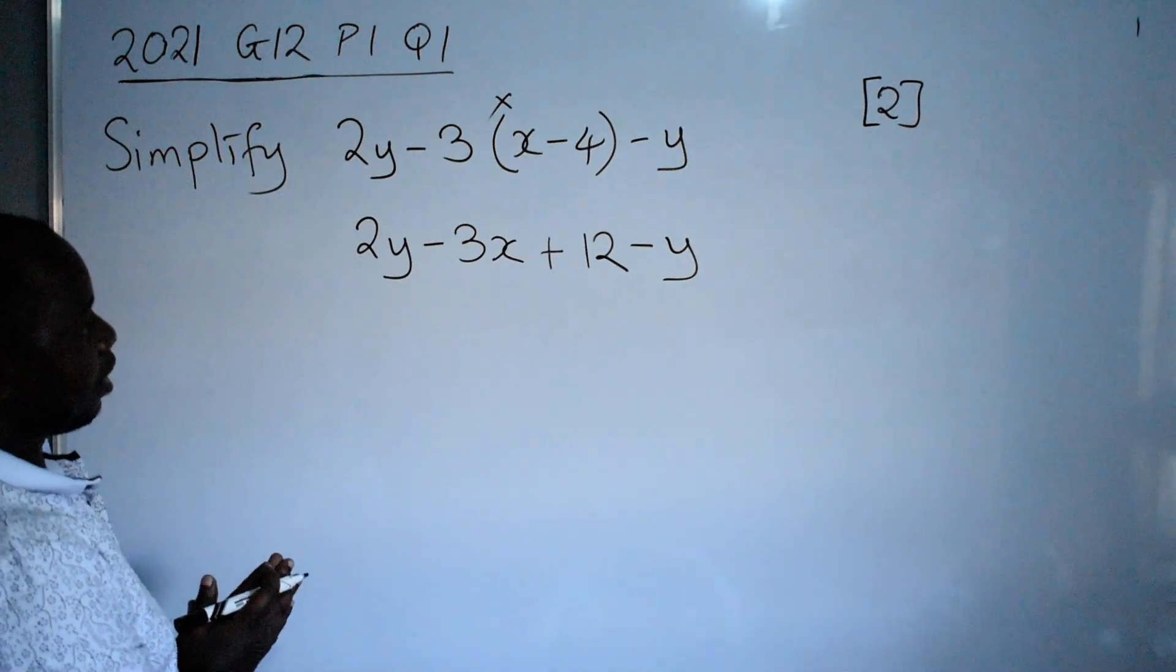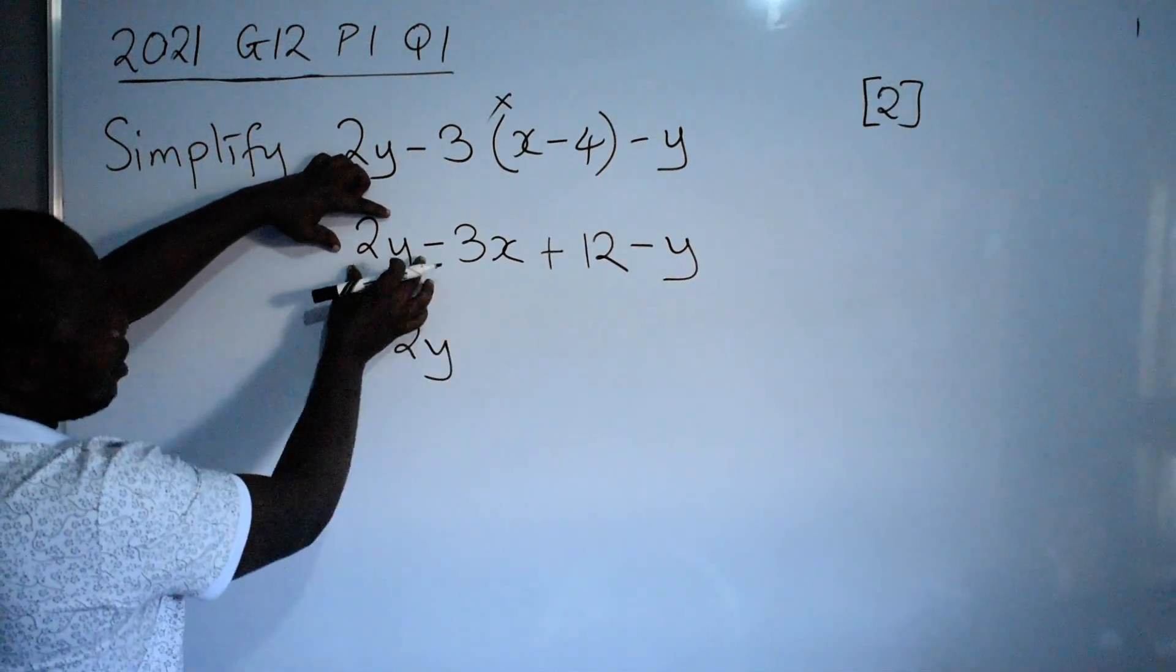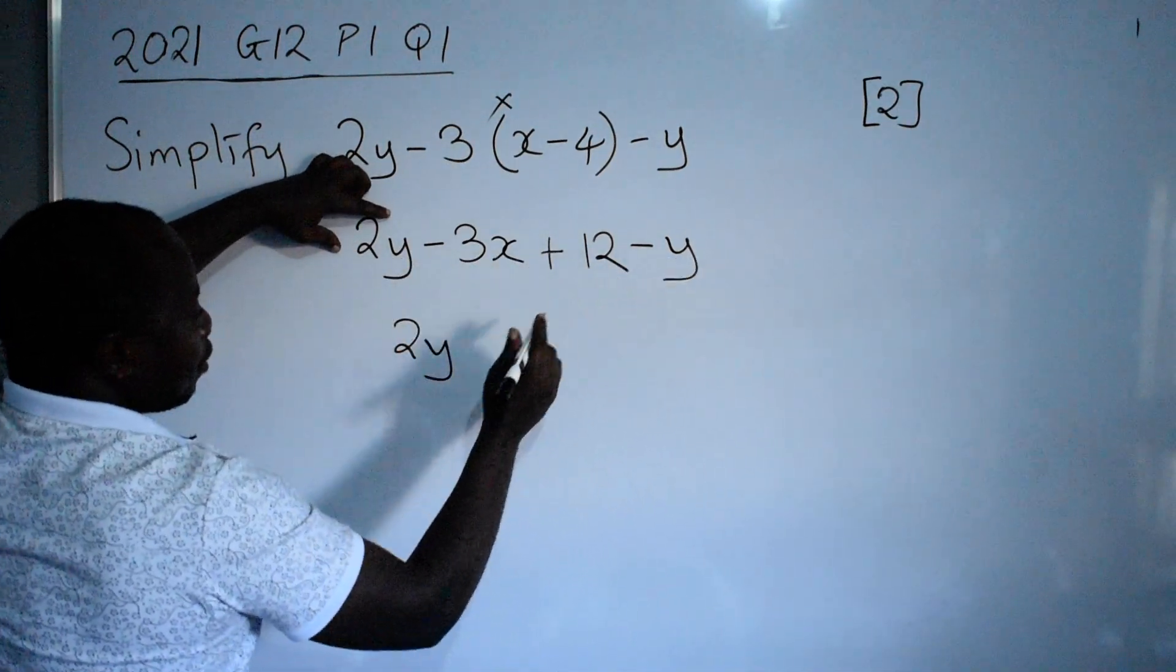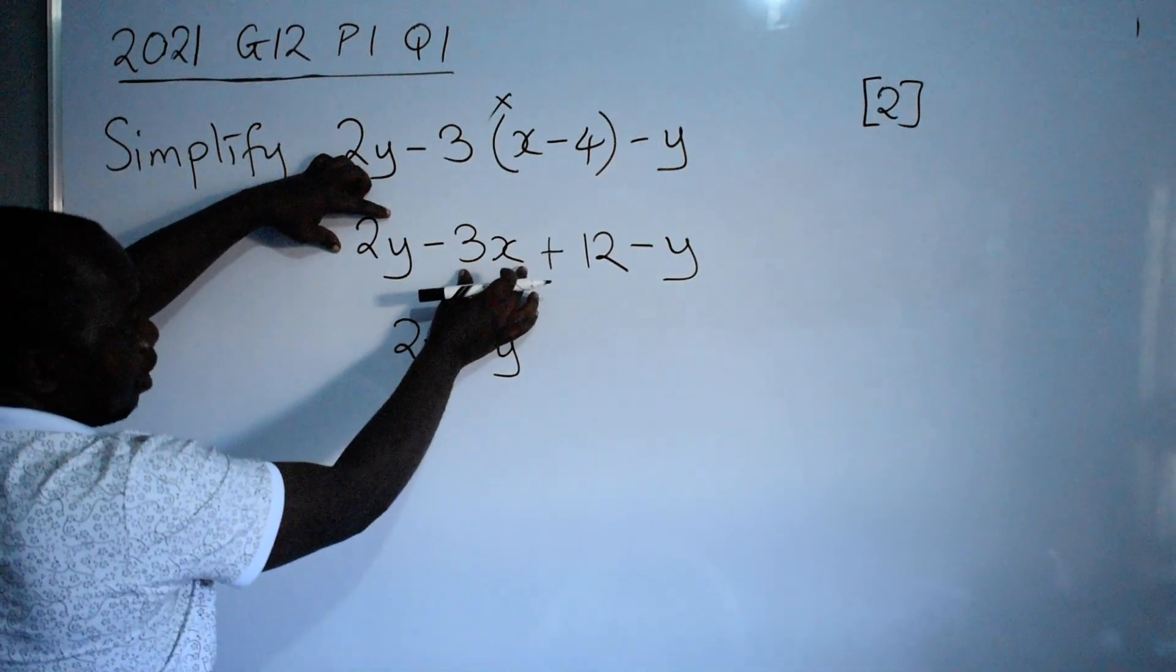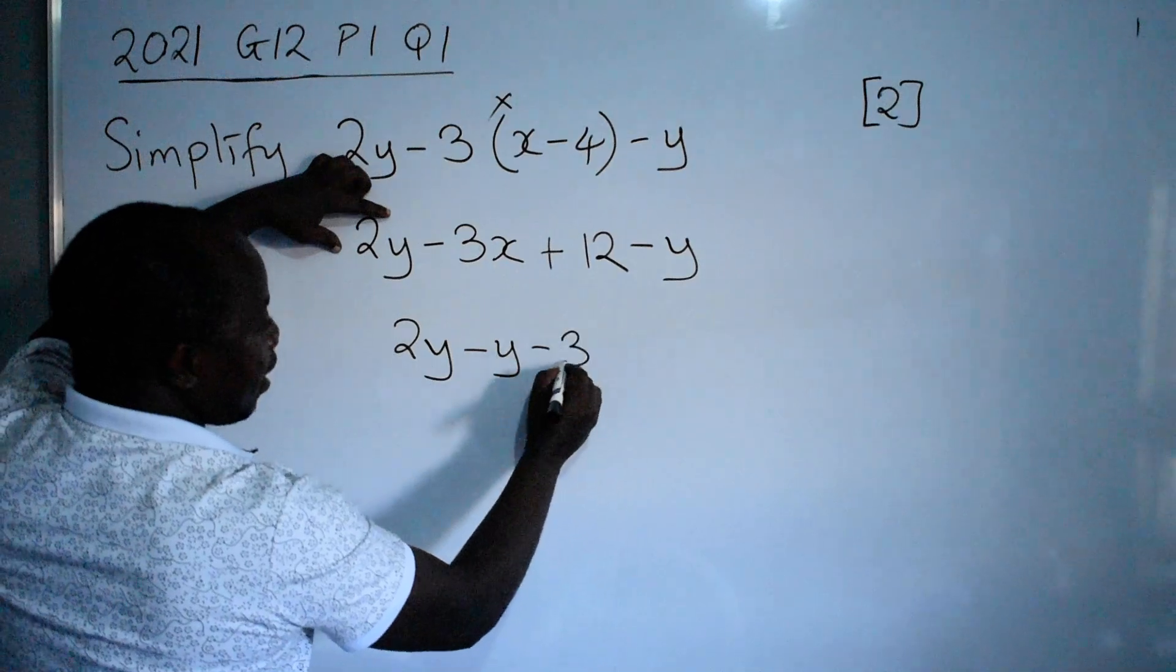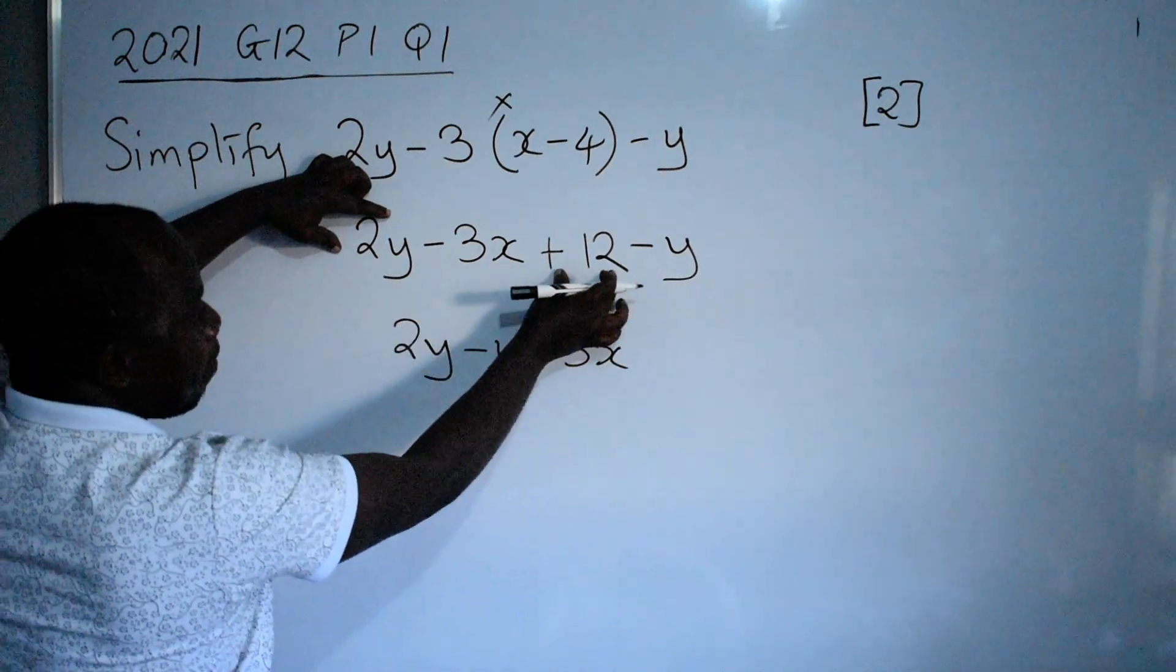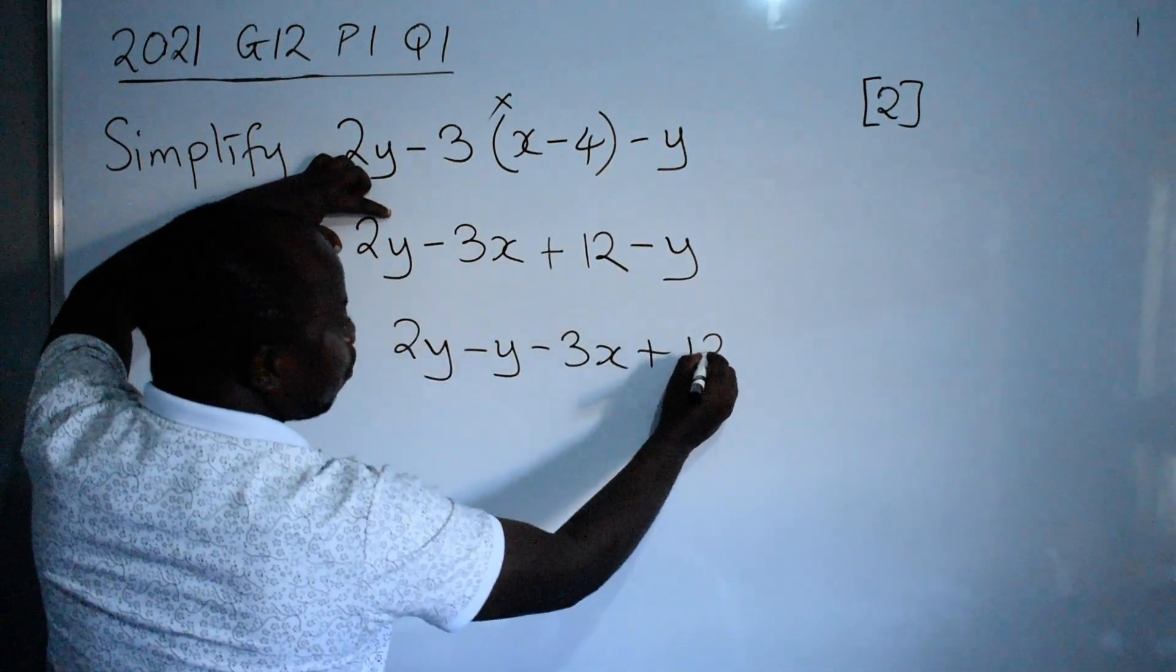Collection of like terms. We have 2y. Where is the pair? It's here. So minus y. You see? Then we have x here minus 3x. You copy the way it is. Plus 12.